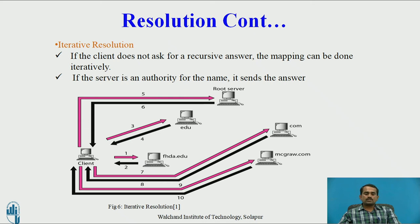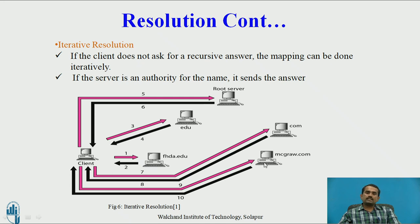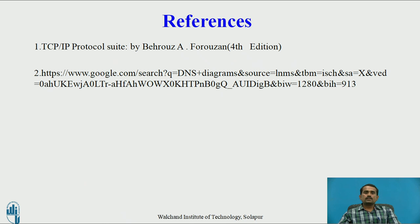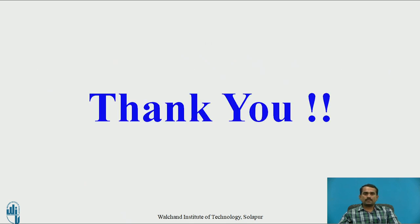Next is iterative resolution. In iterative resolution, if the client does not ask for a recursive answer, the mapping is done iteratively. If the server is authoritative for the name, it sends the answer. Here, one-to-one communication happens until the required answer is obtained. The client sends a request to the server, gets a reply, and if data is not available, the same procedure continues to the next servers — EDU, root server, and so on — until the data is found. These are the references used for preparing this presentation. Thank you.